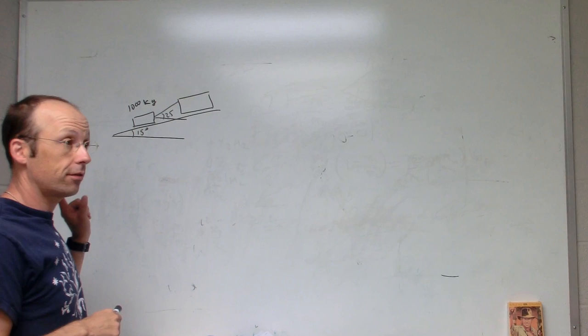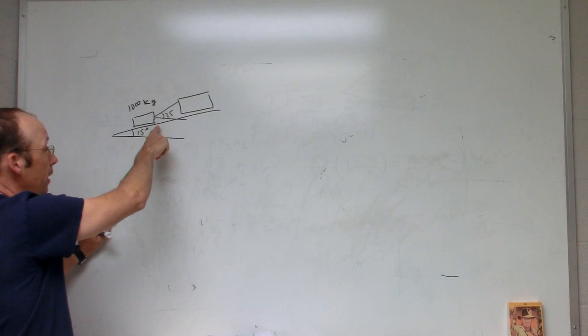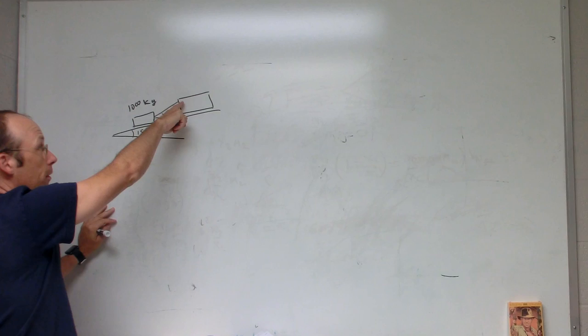I'm going to do a problem similar to one in the textbook but a little different. Here's the situation: we have a car with a mass of 1000 kilograms being pulled up a 15-degree incline by another car, but the rope from the other car has an angle of 25 degrees with respect to the horizontal, so it's not pulling straight up the incline.